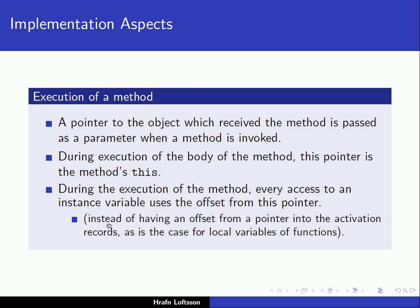This is similar to what's done with local variables inside functions, which are accessed using an offset from a pointer to the activation record. Instead of an offset from a pointer into the activation record, we have an offset from a pointer to the object itself.